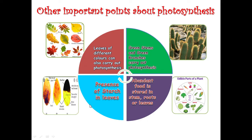Desert plants like cactus have green stems and green branches instead of leaves, and they also carry out photosynthesis.